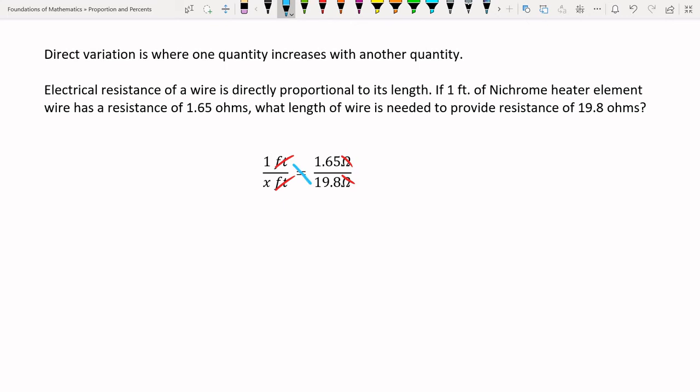And you see here that I have the units on top of each other, which means they cancel, which is what we want. Now all we have to do is cross multiply and divide. 1 times 19.8 is 19.8. And this equals X times 1.65, or 1.65X. Then we just divide by the number in front of the X term. So we have X equals 19.8 divided by 1.65 gives us 12. And we know X is in feet because we're looking for what length of wire. 12 feet is required for that.